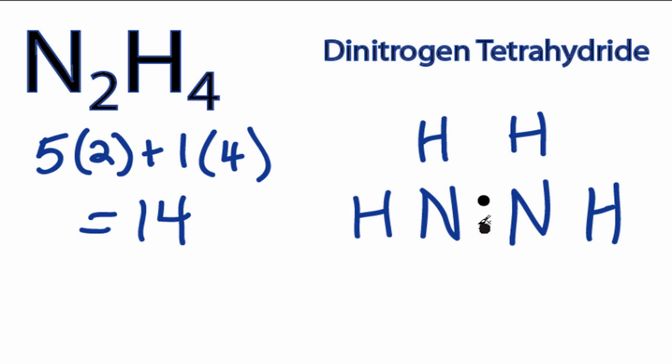Then we'll put 2 valence electrons between the atoms to form chemical bonds. We've used 6, 8, 10, back in the center, 12, and 14.